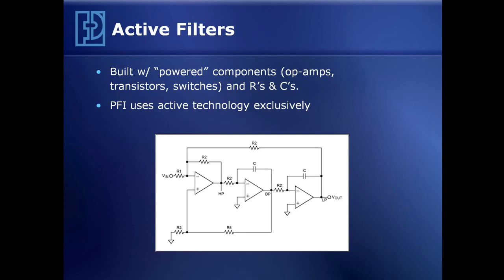The picture on this slide is called a state variable filter, in that it presents high-pass, band-pass, and low-pass outputs for a ratio of second-order polynomials, where we can implement poles and zeros of pretty much any transfer function we want.